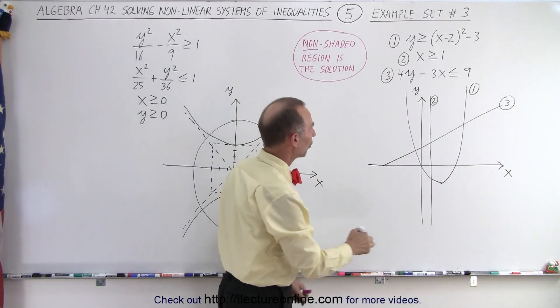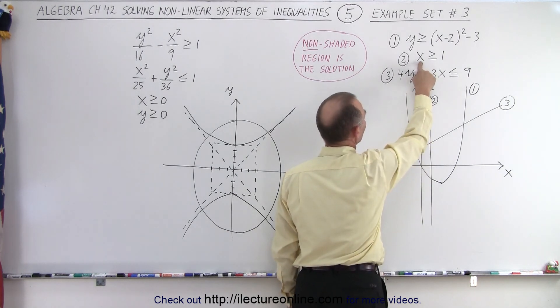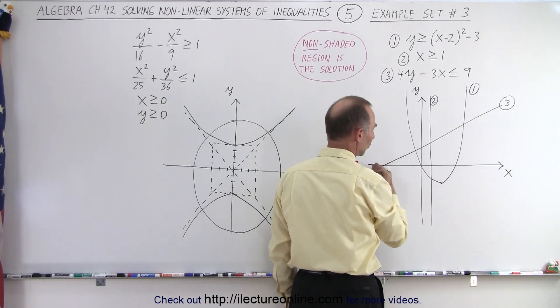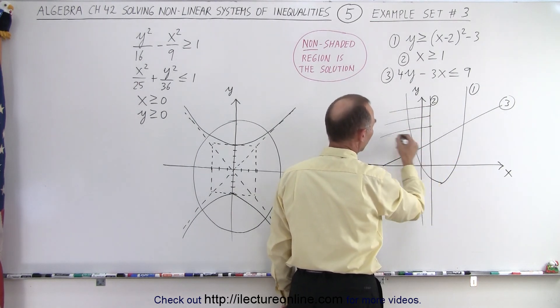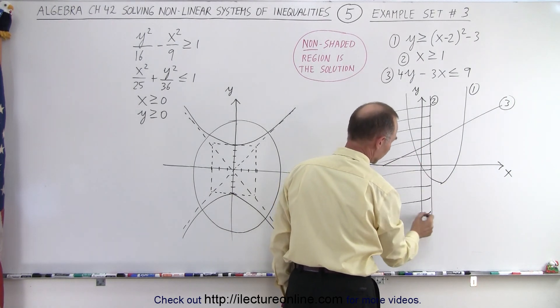So for line number two, we pick the point zero, zero, plug in zero for x. Is zero greater than one? The answer is no. That means this is not part of the solution. This is. So we get rid of the portion that is not part of the solution.